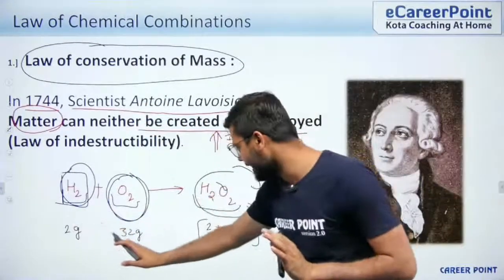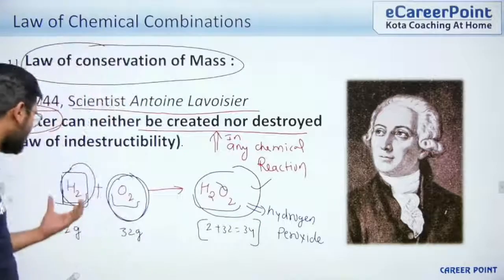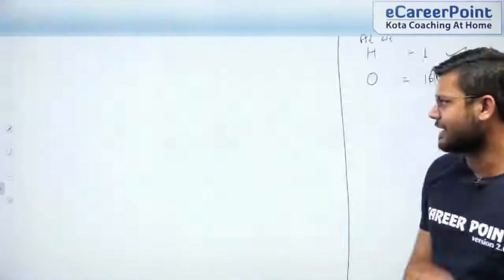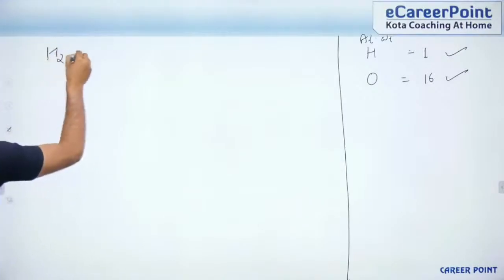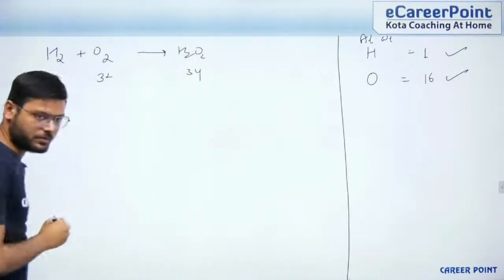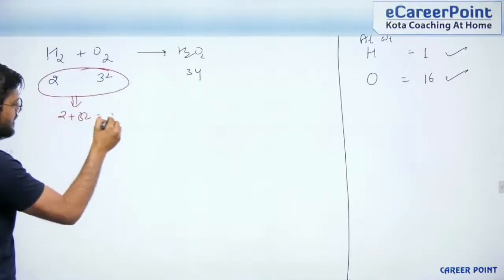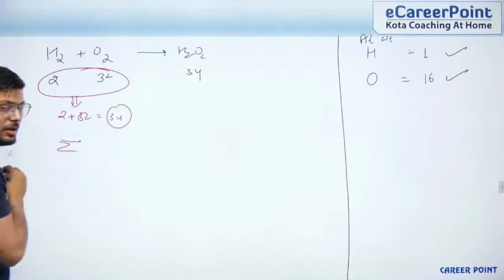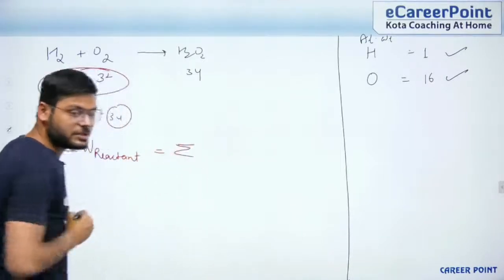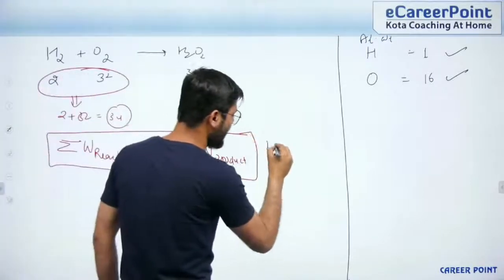So I have 2, 32, and 34. Why am I calculating the molecular weight of these compounds? If you calculate it, you can see 2 plus 32 equals 34 on the reactant side, and the product side is also 34. So I can write: the sum of the weight of reactants is going to be equal to the sum of the weight of products.